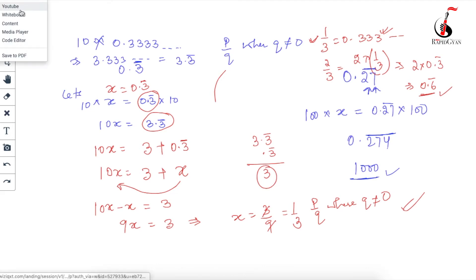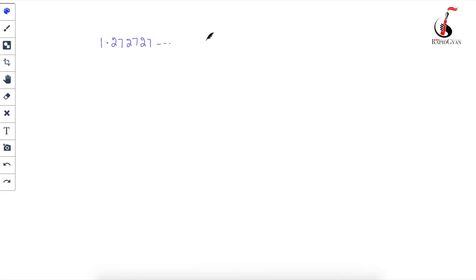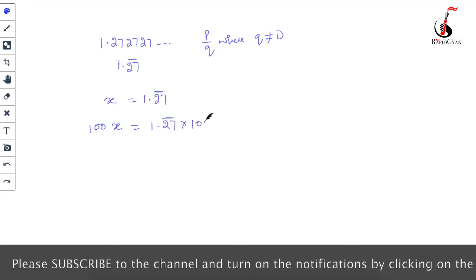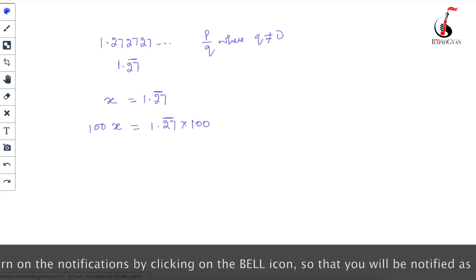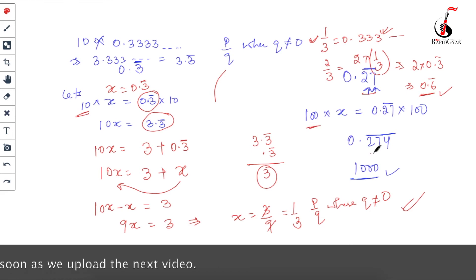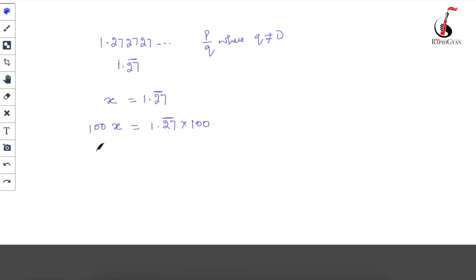The next question asks you to convert 1.27272727... into p by q form where q ≠ 0. I can write this as 1.27̄. First assume x = 1.27̄, then multiply both sides by 100. Why 100? Because there are two digits repeating - 27. As I told you: one digit repeating → multiply by 10; two digits repeating → multiply by 100; three digits repeating → multiply by 1000, and so on.